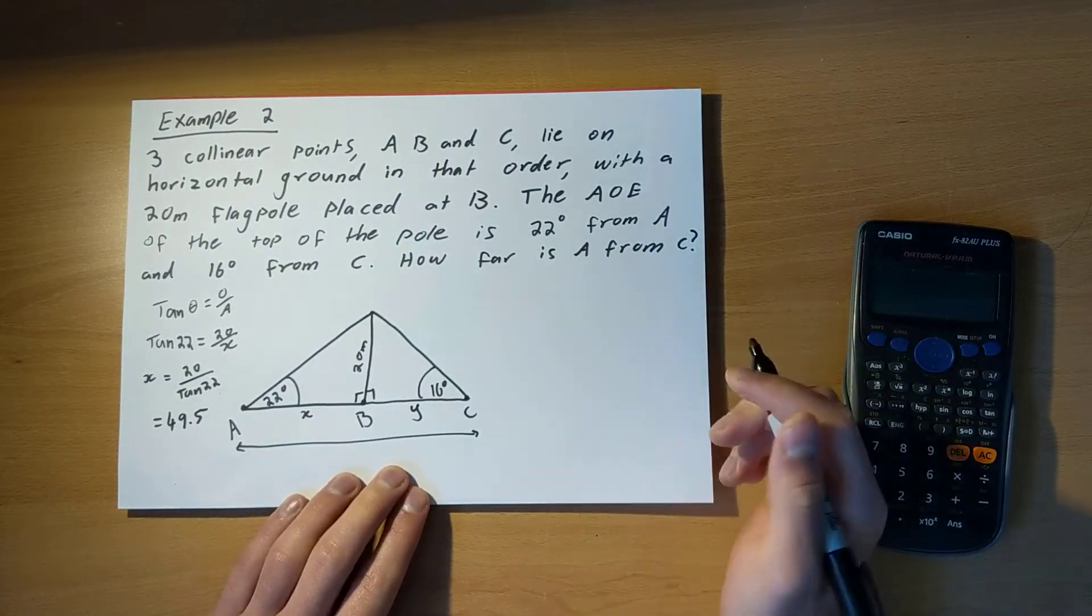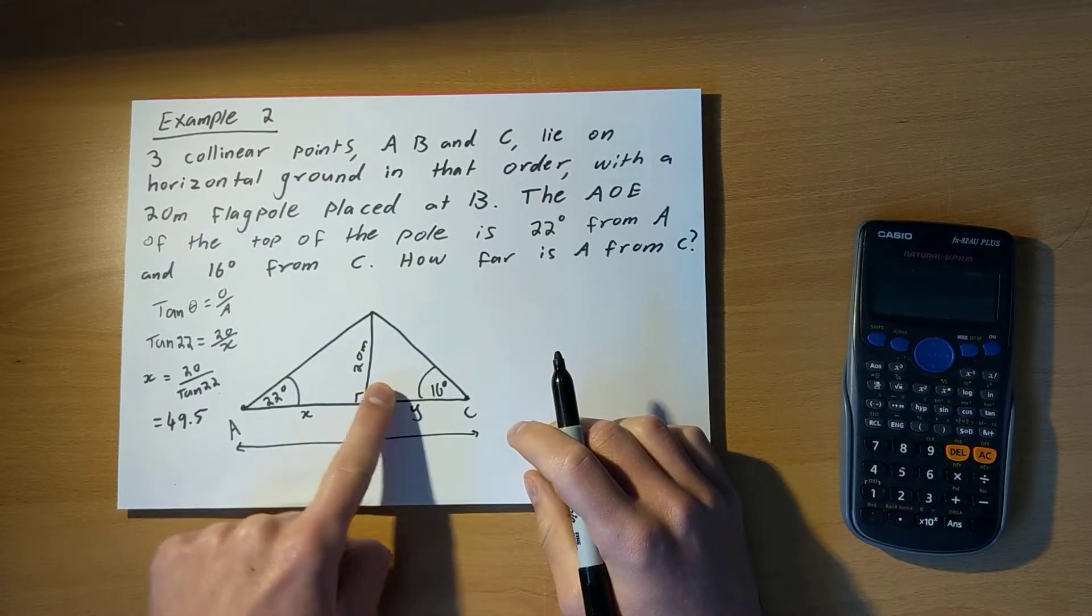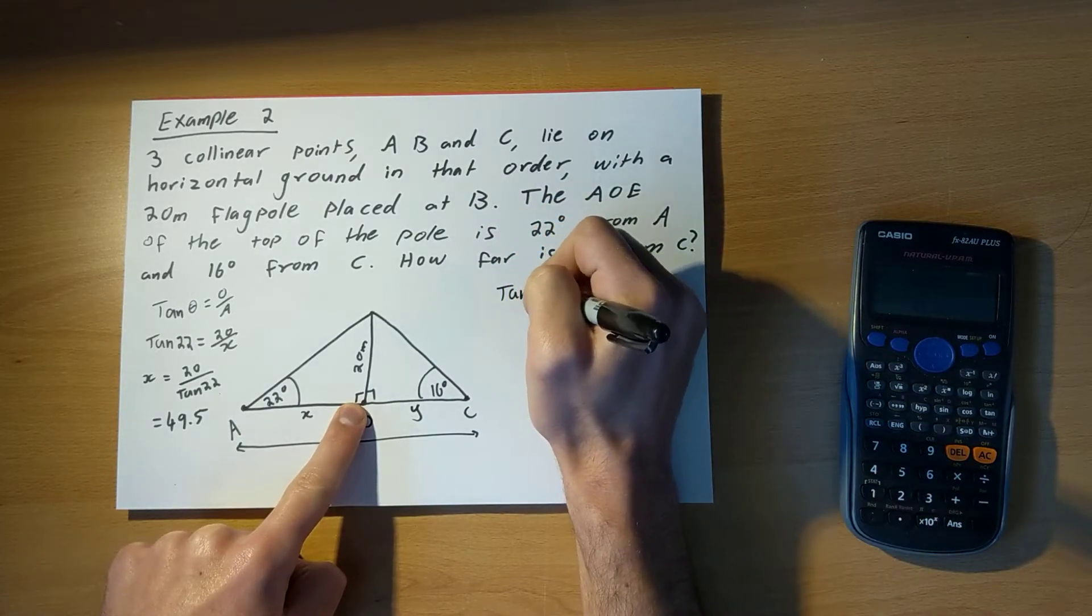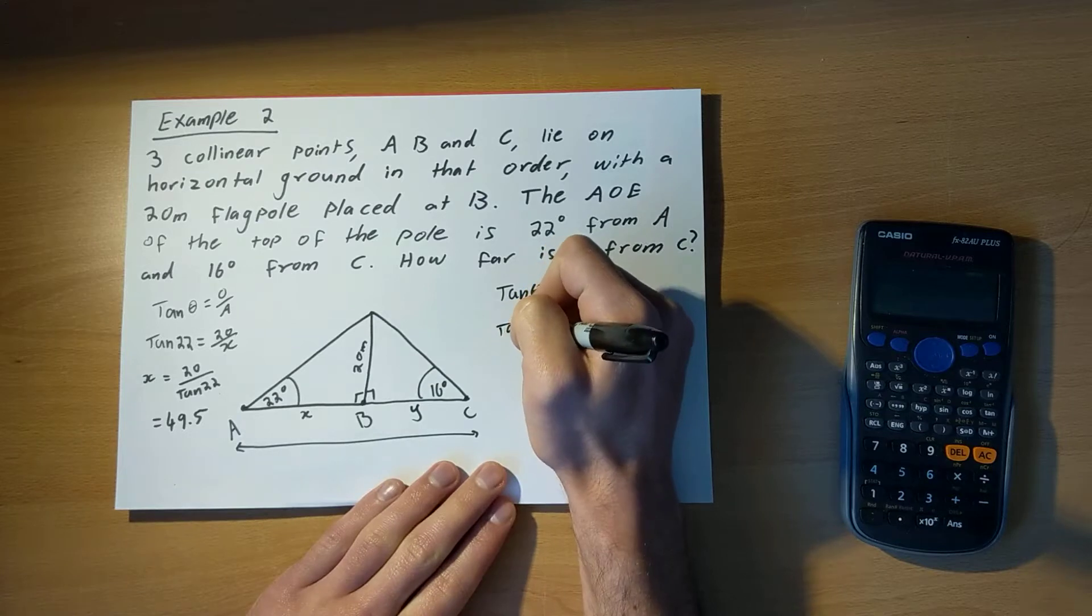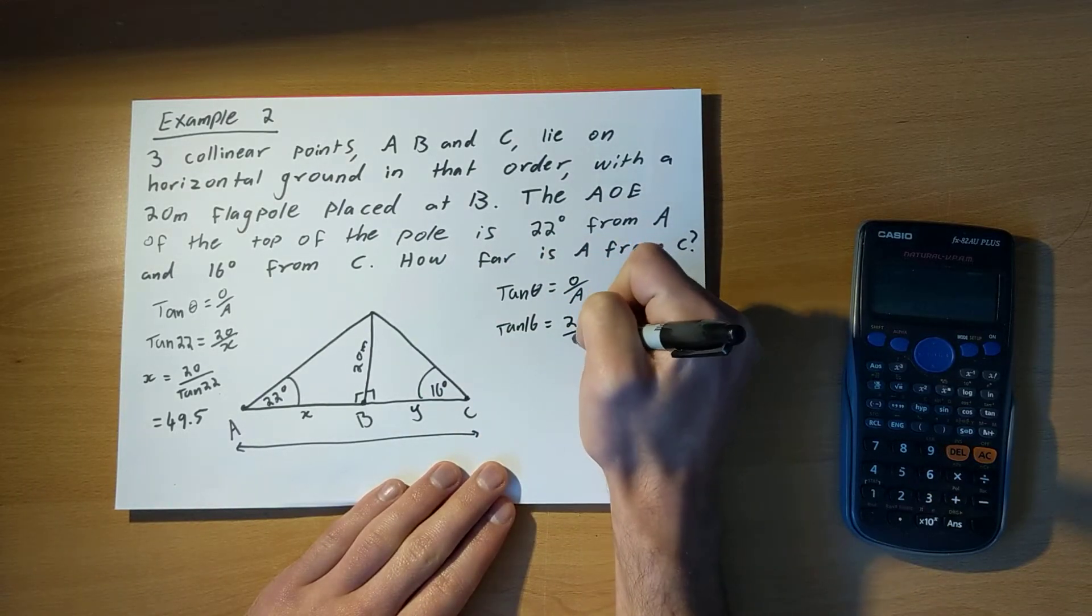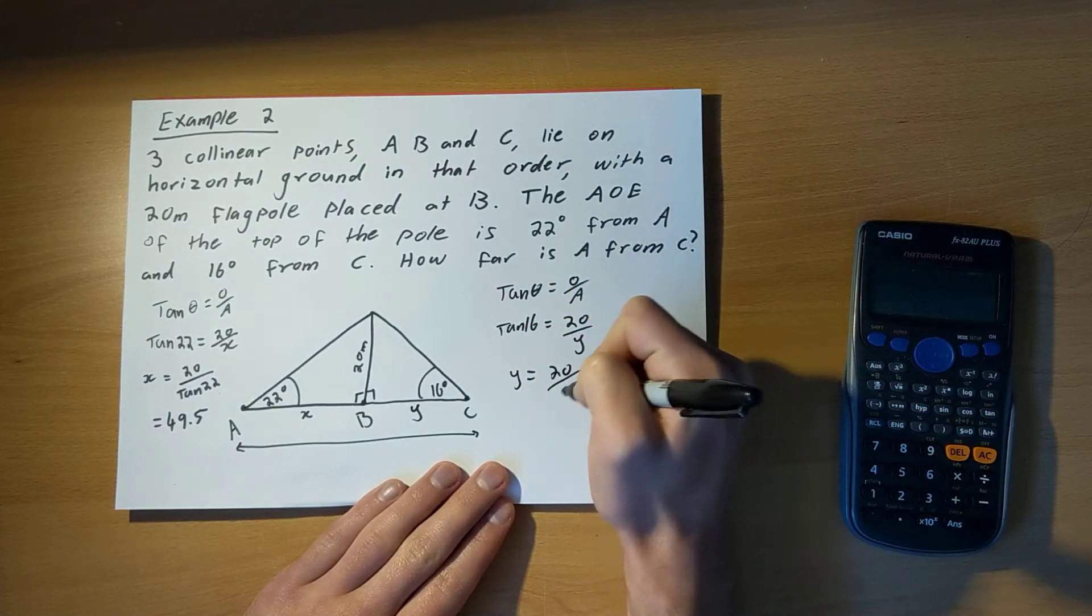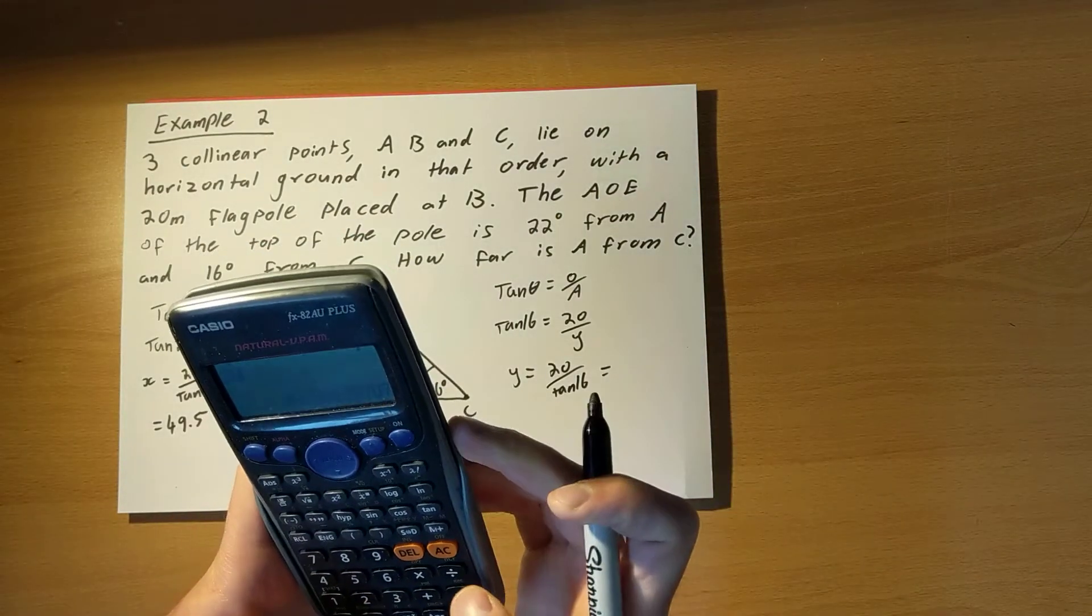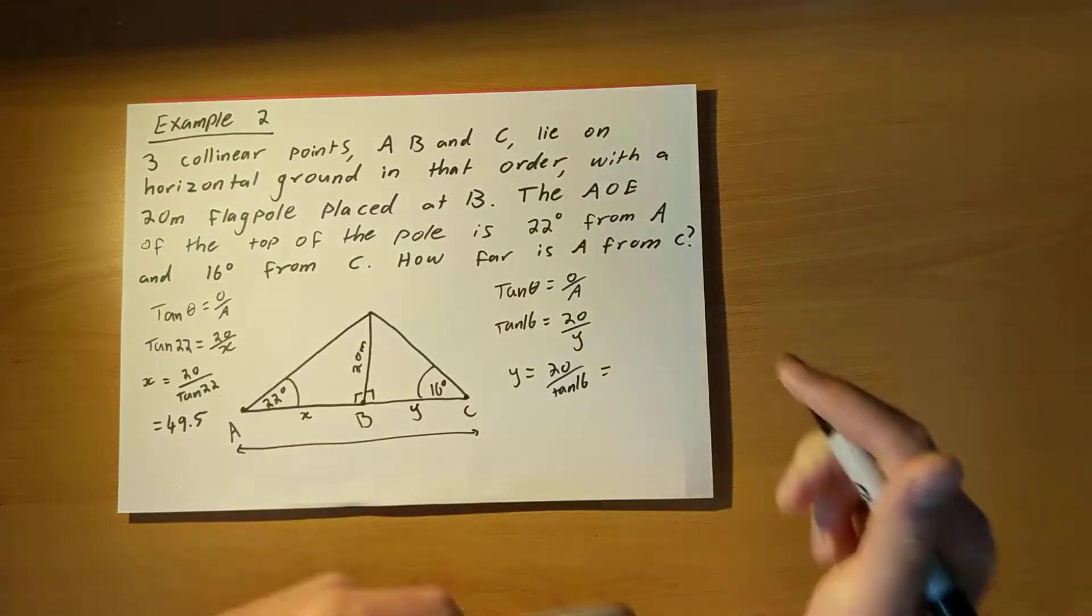Okay, let's now solve for Y. I'm going to do exactly the same thing. I've got my angle here. I've got my opposite and my adjacent. So again, I'm using tan of theta equals opposite over adjacent. Putting in the numbers, tan of 16 equals 20 over Y. I'm going to rearrange to get Y equals 20 over tan 16. And if I put that into my calculator, that gives me 69.7.